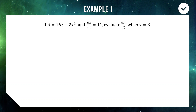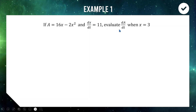We have a relationship between a and x: A = 16x − 2x². We know dx/dt = 11, which we interpret as the rate of change of x. So if that's 11, evaluate the rate of change of A when x = 3.